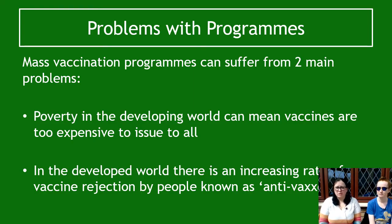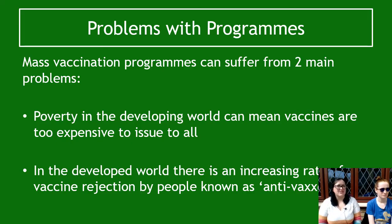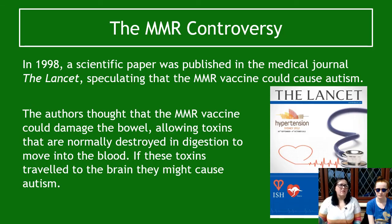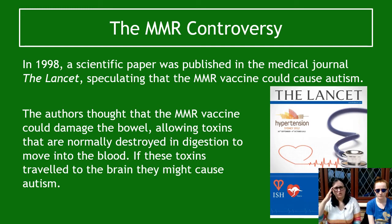We're going to cover one specific example of this, though it's not something that'll be in the exam — you won't get asked about the MMR or Andrew Wakefield. But you need to have an understanding of what happens when vaccines are not taken. In 1998, a scientific paper was published in the Lancet, a highly respected medical journal. The authors thought that the MMR vaccine could damage the bowel, allowing toxins normally destroyed during digestion to move into the blood and potentially travel to the brain and cause autism.